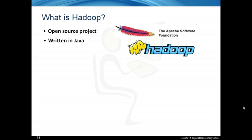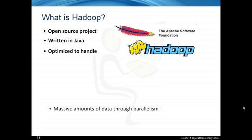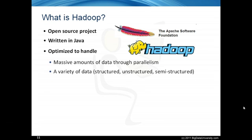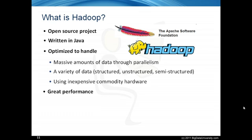Hadoop uses Google's MapReduce and Google File System technologies as its foundation. It is optimized to handle massive quantities of data, which could be structured, unstructured or semi-structured, using commodity hardware — that is, relatively inexpensive computers. This massive parallel processing is done with great performance.